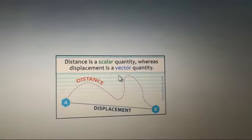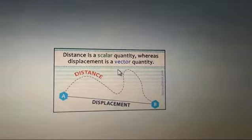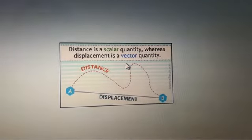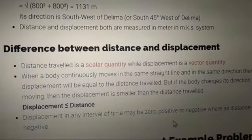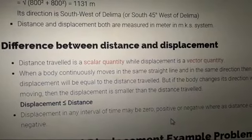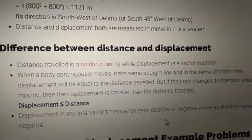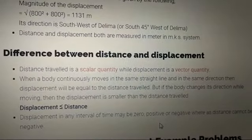When I say vector quantity, you also have to tell the direction. Vector quantity is a quantity which requires both direction and magnitude for its description. So we can sum it up like this: distance traveled is a scalar quantity, displacement is a vector quantity.